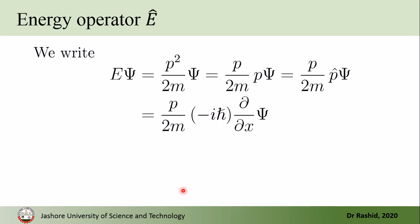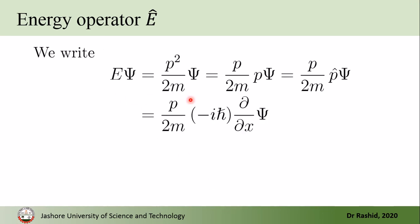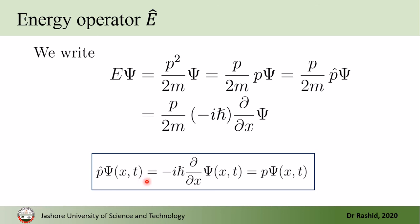Now we want to find the energy operator in terms of the momentum operator. For that, we multiply ψ from the left on both sides of the equation E = p²/2m and write it as (p/2m)·(p·ψ). We know from the definition of the operator that p̂·ψ gives p·ψ, so instead of p·ψ we write p̂·ψ with the explicit operator definition.